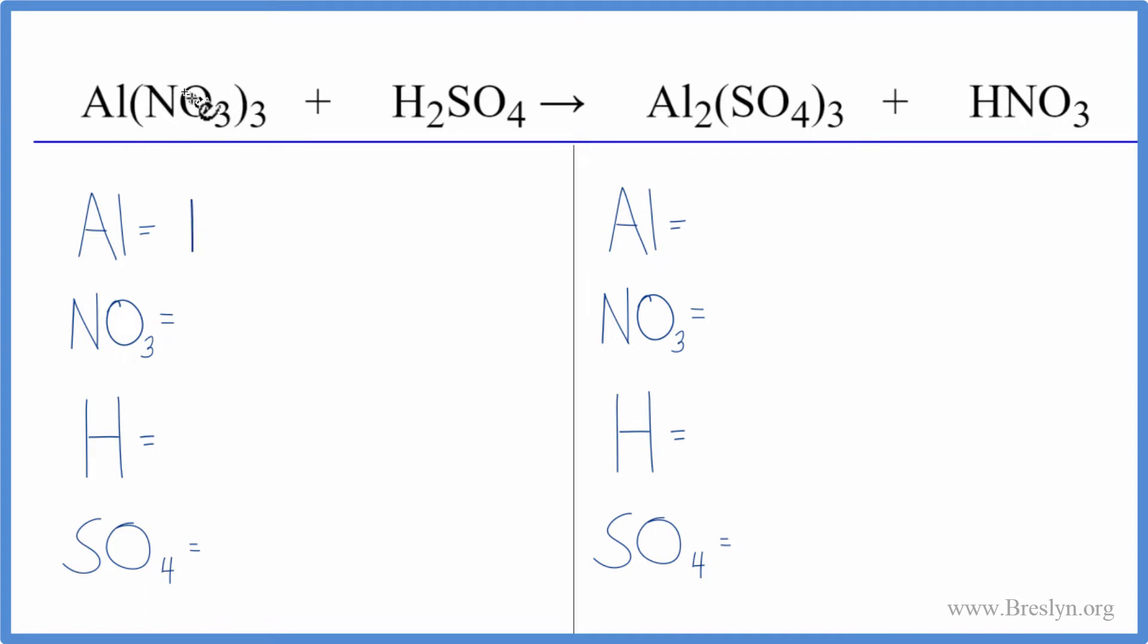And then this NO3, it's called the nitrate ion. It stays together - we have a nitrate ion here and a nitrate ion here. So we're going to count this as just one thing. We have our one nitrate times three - three of those. That's going to make it a lot easier.